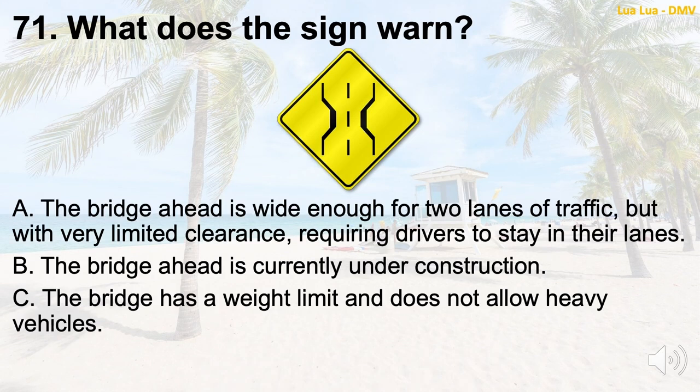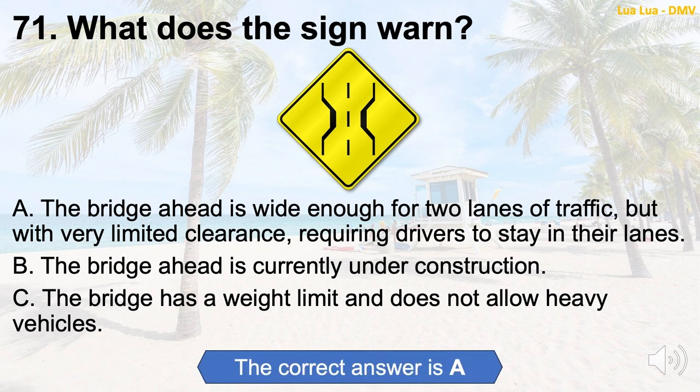Question 71: What does the sign warn? A. The bridge ahead is wide enough for two lanes of traffic but with very limited clearance, requiring drivers to stay in their lanes. B. The bridge ahead is currently under construction. C. The bridge has a weight limit and does not allow heavy vehicles. The correct answer is A: The bridge ahead is wide enough for two lanes of traffic but with very limited clearance, requiring drivers to stay in their lanes.